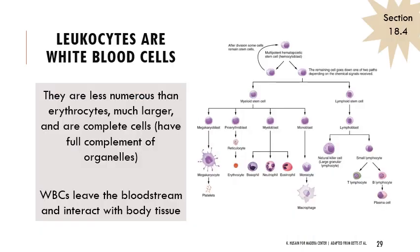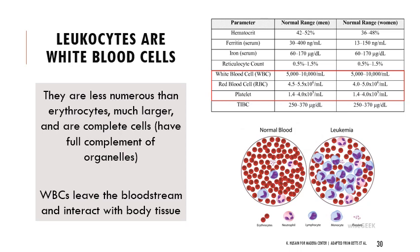Leukocytes — white blood cells — are far fewer in number than erythrocytes but much larger on average and are complete cells with all organelles. Red blood cells lack nuclei, mitochondria, and endoplasmic reticulum, whereas white blood cells have all those organelles and can leave the bloodstream to interact with body tissue. On average, there are about 5,000 to 10,000 white blood cells per microliter, compared to 4 to 5.5 times 10 to the 6 red blood cells per microliter — orders of magnitude more red blood cells.